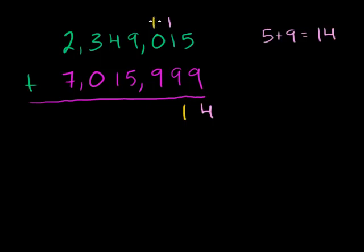Now we're in the hundreds place. 1 plus 0 is 1, plus 9 is 10. So we write the 0 from the 10, carry the 1. 1 plus 9 is 10, 10 plus 5 is 15. Now we're in the 10,000s place. 1 plus 4 is 5, and 5 plus 1 is 6.